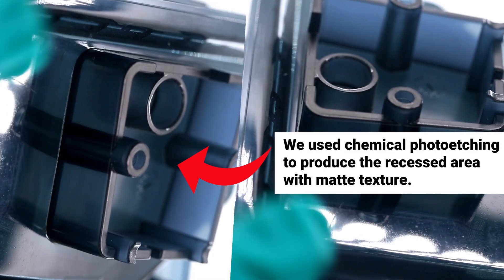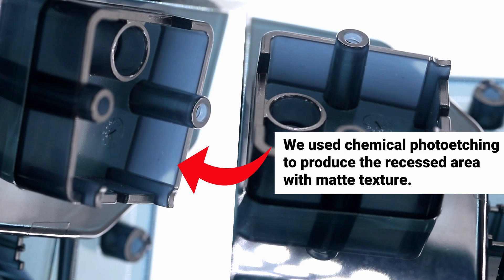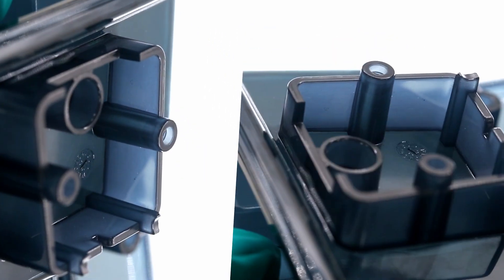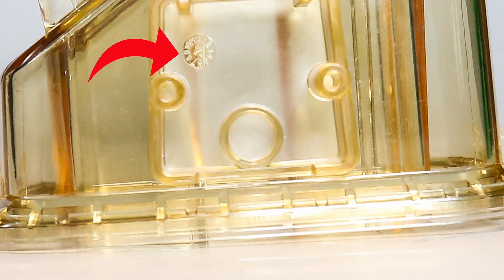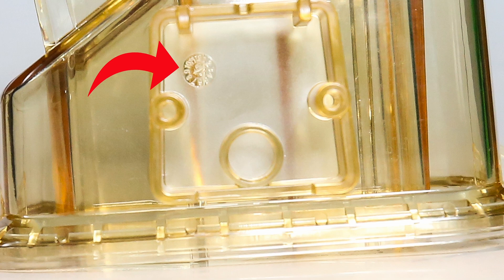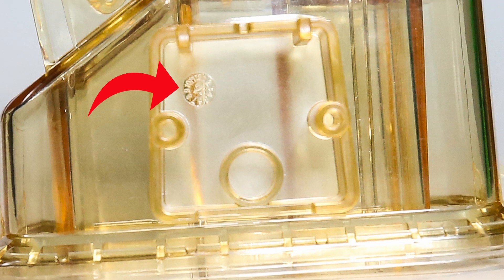However, notice this recessed area with a matte texture. To produce that, we used chemical photo etching. Matte textures like these make it easier to see the manufacturing date, which is stamped in this window during each day's production run.